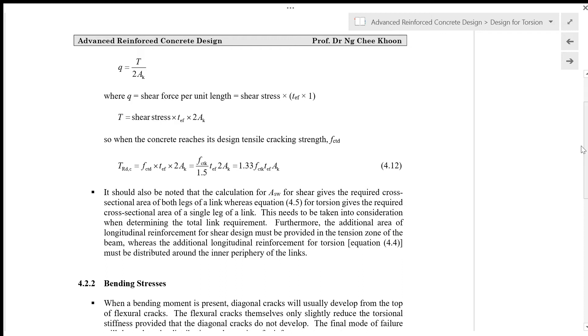T is the shear stress times 2AK. So when the concrete reaches its design tensile cracking strength FCTD, TRDC = FCTD × TEF × 2 × AK.